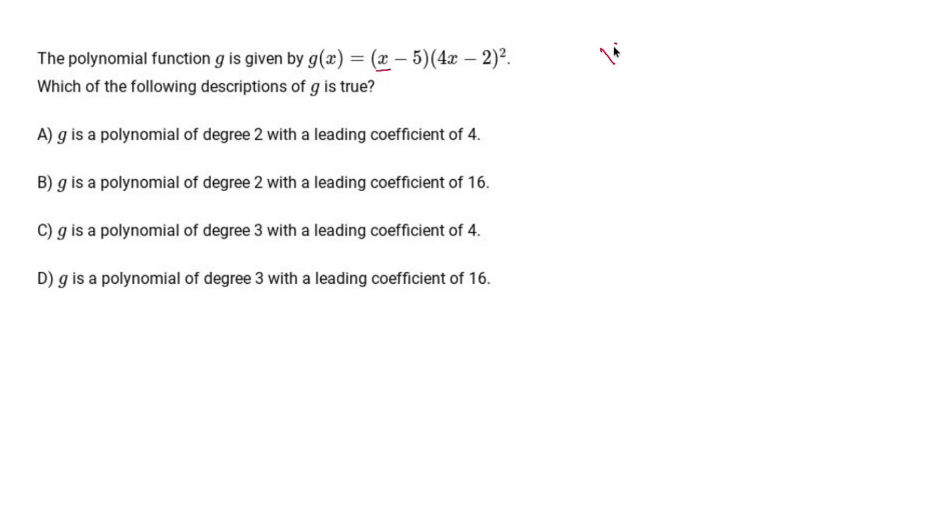I have an x, and if we're talking about the leading coefficient, we're just talking about the leading terms of each one. So I have an x times a 4x times a 4x. Why two 4x's? Because it's squared.